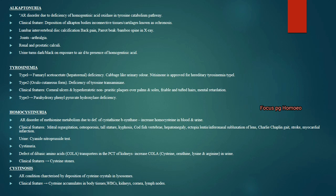Tyrosinemia type 1 (hepatorenal) is due to deficiency of fumarylacetoacetate hydroxylase; patient has cabbage-like urinary odor. Type 2 (oculocutaneous form) is due to deficiency of tyrosine transaminase; patient presents with corneal ulcers, hyperkeratotic non-pruritic plaques over palms and soles, friable tufted hairs and mental retardation. Type 3 has parahydroxyphenylpyruvate pyruvate hydroxylase deficiency.